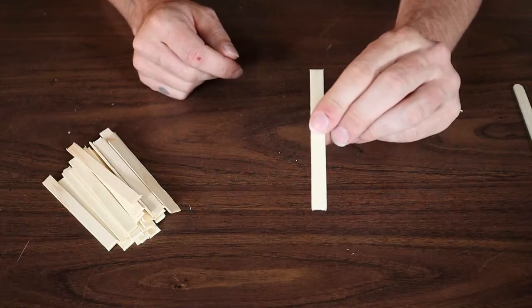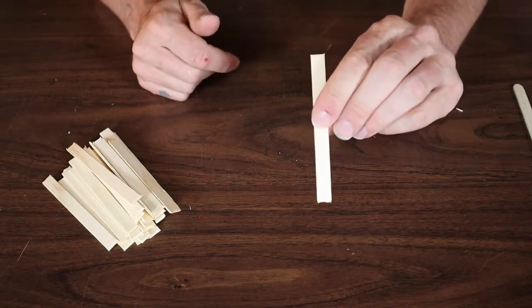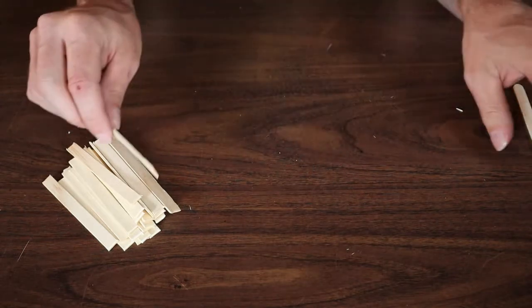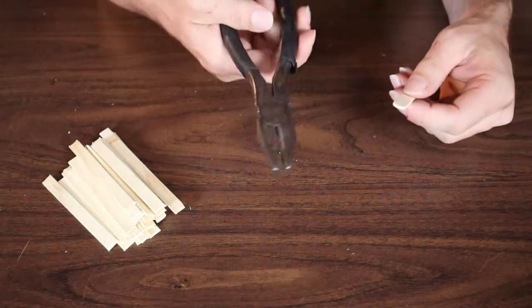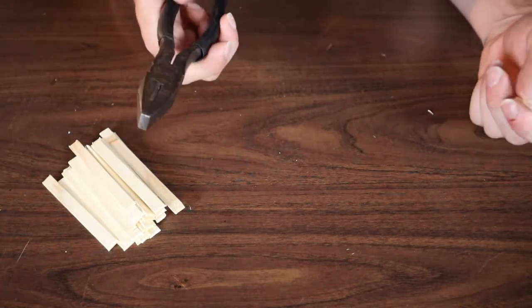For these popsicle stick pallets you're going to need 17 popsicle sticks. They look nicer if you cut the ends flat. An easy way to do that is just to grab a pair of pliers that have cutters, scissors, side cutters, even a saw or a sharp knife.